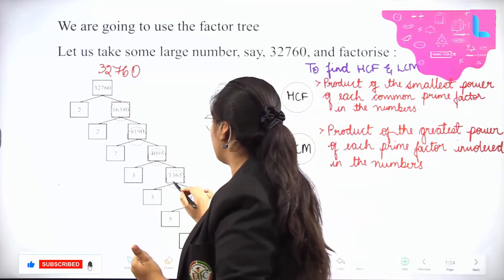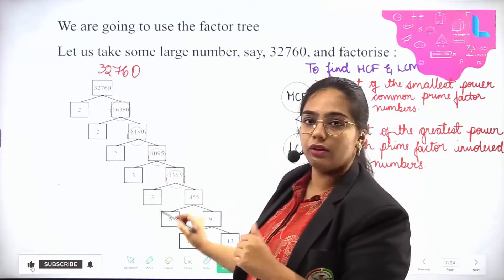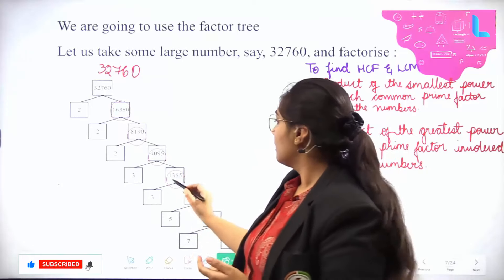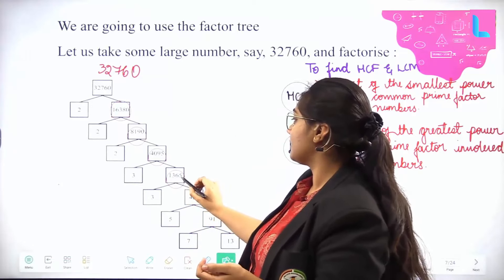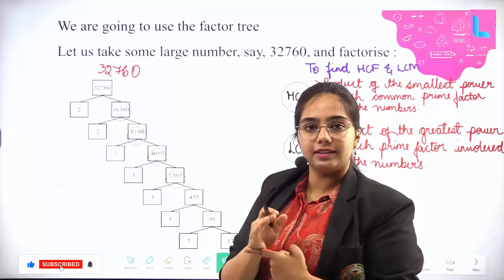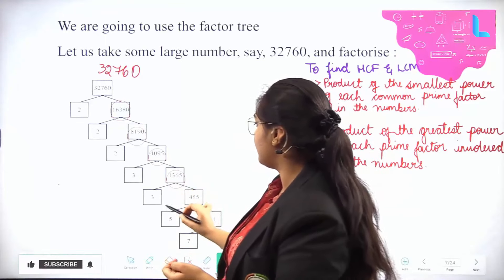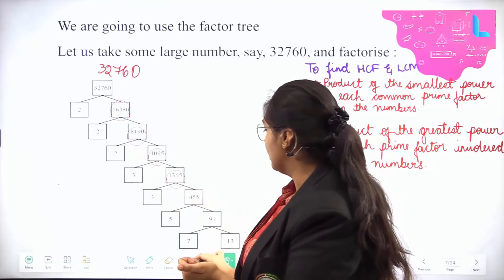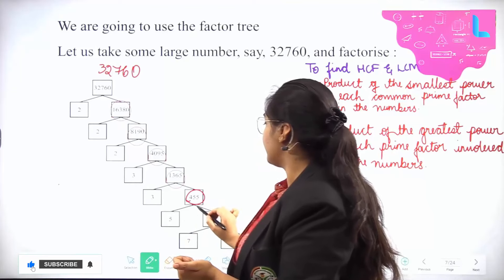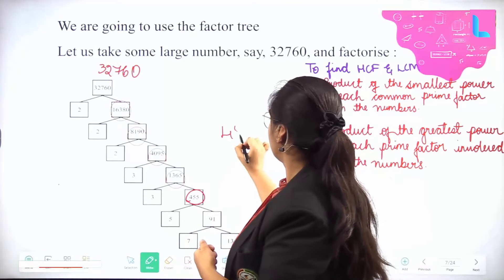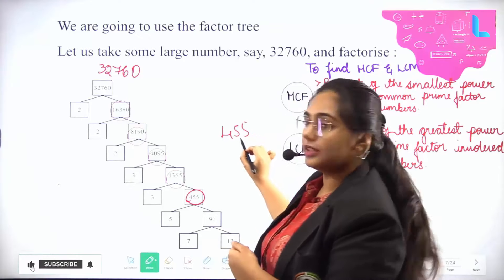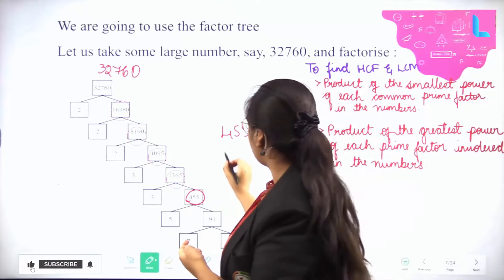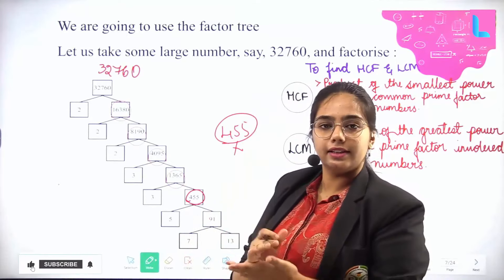So 3 × 1,365 = 4,095. Check if 1,365 is divisible by 3: 1 + 3 + 6 + 5 = 15, and 15 is divisible by 3, so yes. Then 3 × 455 = 1,365. Check if 455 is divisible by 3: 4 + 5 + 5 = 14, and 14 is not divisible by 3, so the whole number is also not divisible by 3.